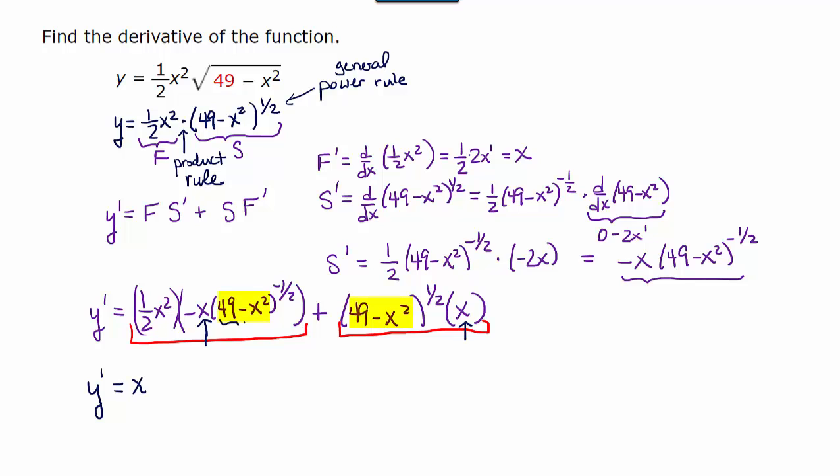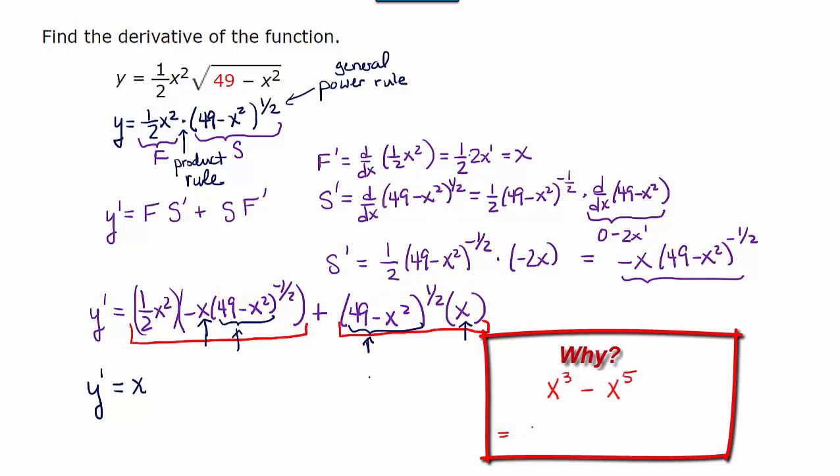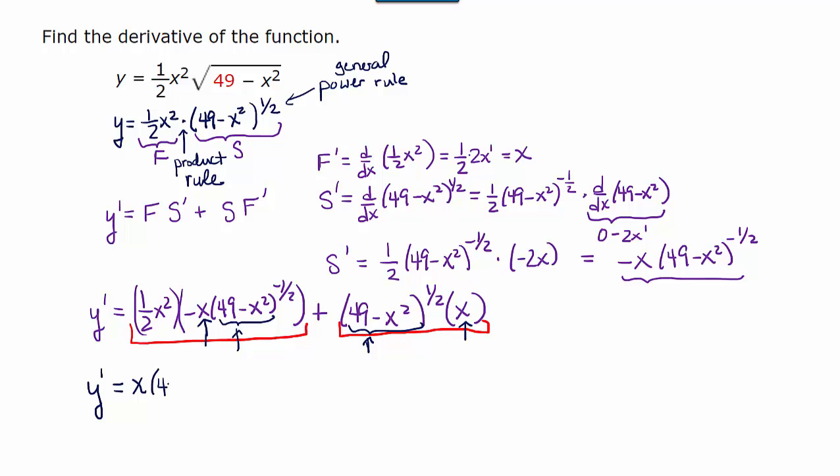And we also have a factor of 49 minus x squared. And now remember, when we are factoring out of two different terms with the same base, we always want to factor out the lowest exponent. So I'm going to factor out 49 minus x squared to the lower of the two, which is negative one half.